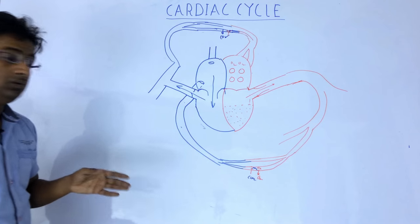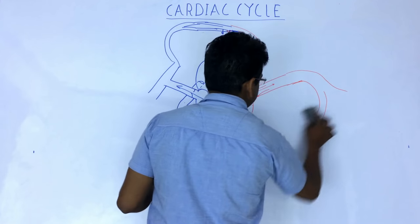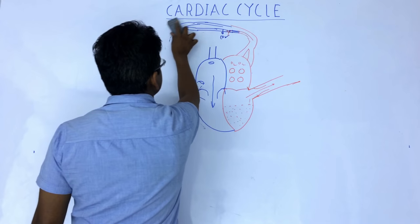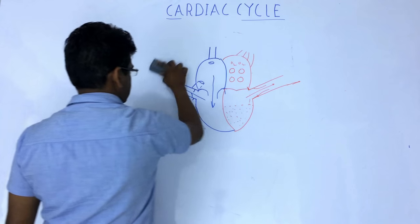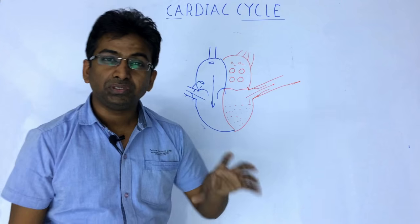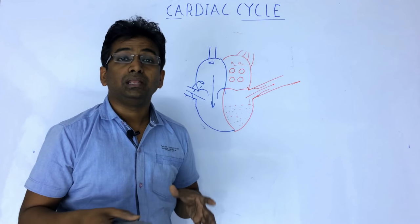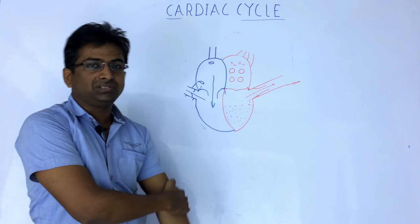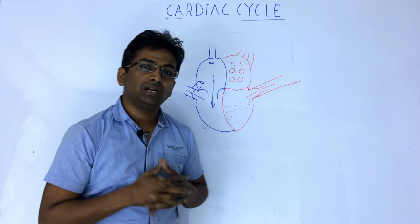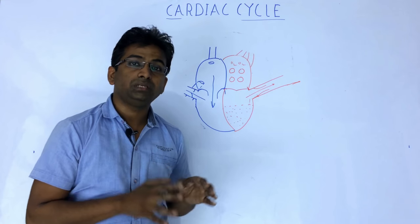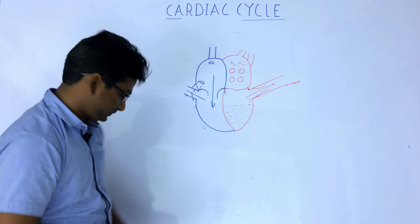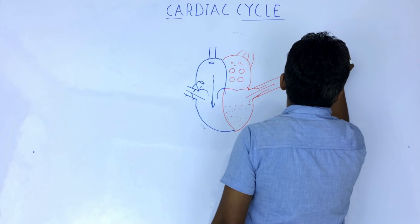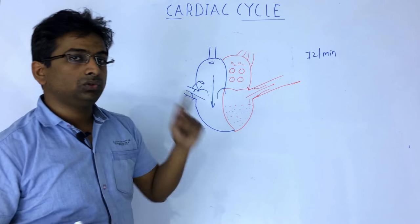The cardiac cycle has two phases: systole, which is contraction, and diastole, which is relaxation — each applying separately to the atria and the ventricles. The duration of the cardiac cycle, considering a heart rate of 72 beats per minute, is 0.8 seconds. This is calculated as 60 divided by 72, which is approximately 0.8 seconds.